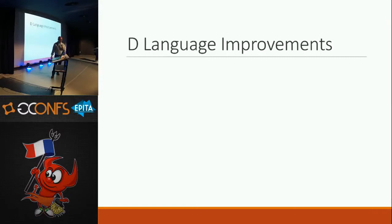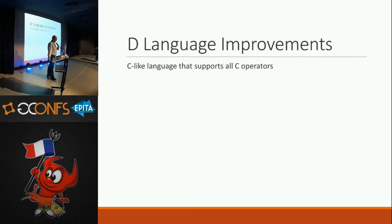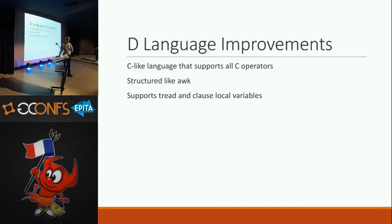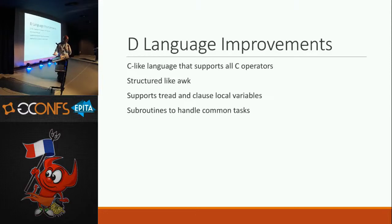We've made a few improvements to the D language. D is a C-like language that supports all the C operators. It was really structured like awk. It has thread and clause local variables, subroutines to handle common tasks, but you can't write your own.